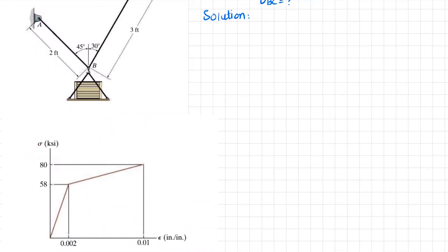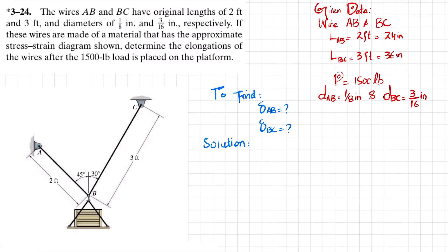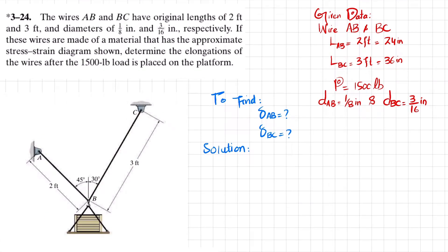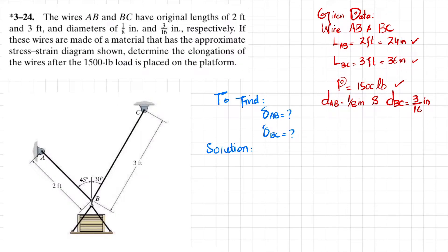All the data is written on the right side. Wire AB length is 2 feet which is 24 inches; length of BC is 3 feet which is 36 inches. A load of 1500 pounds is applied and all the diameters are given. We need to find the change in length of wire AB and the change in length of wire BC.